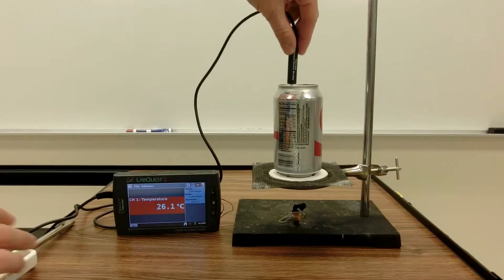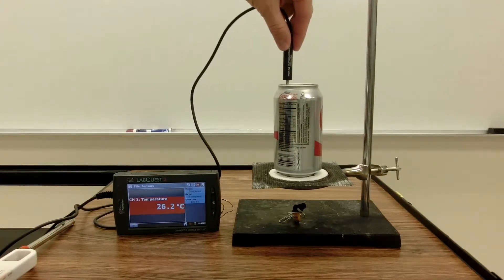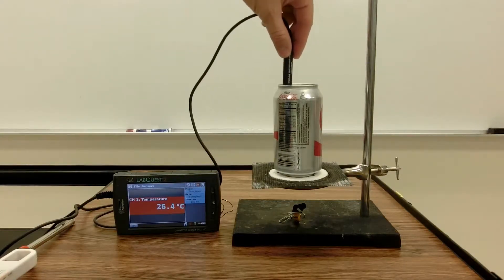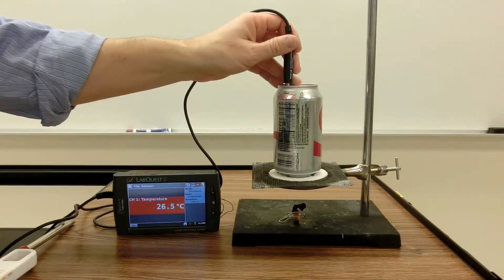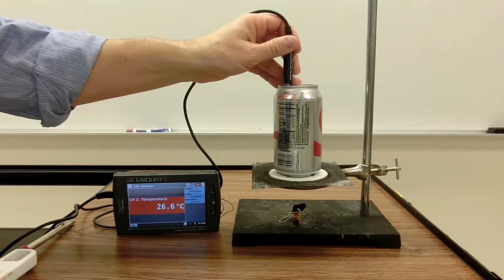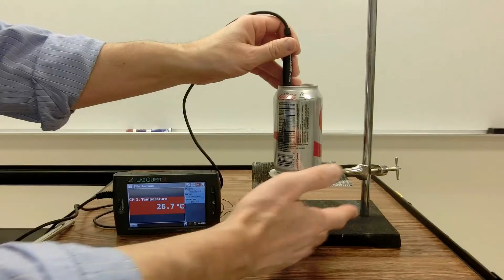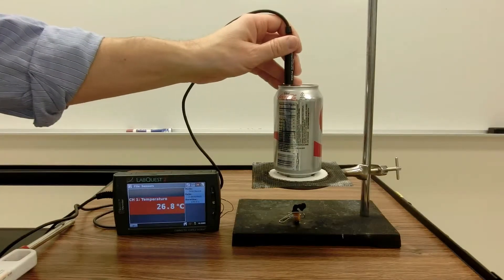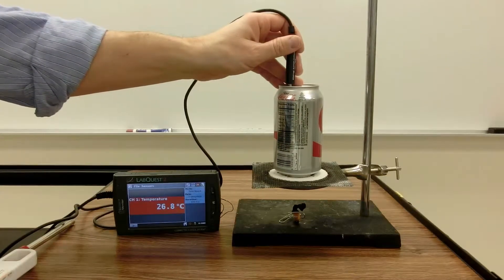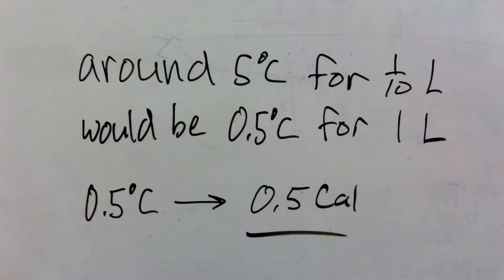Since this can only had a tenth of a liter of water in it, its temperature will change by ten times more than if it had one whole liter. Now it's gone up by about four degrees Celsius — let's say it ends up at five degrees Celsius. With our definition, if we had had one whole liter of water it would have only gone up 0.5 degrees, so that would be 0.5 calories of energy transferred into the water. There really is more energy in the chip, but that's all that's actually getting into the water.